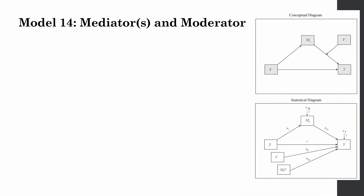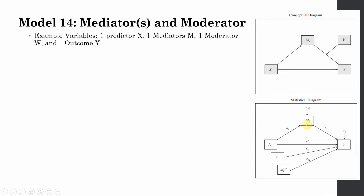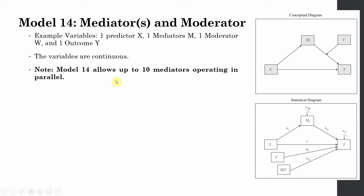This is the conceptual diagram and this is the statistical diagram. We have one predictor, one mediator, one dependent variable, and one moderator variable. These variables are continuous. Model 14 allows up to 10 mediators operating in parallel.